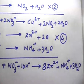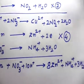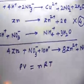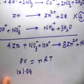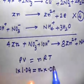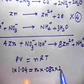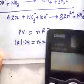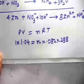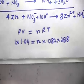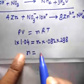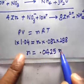Now let's find the moles of NO2 using PV = nRT. P = 1 atm, V = 1.04 L, R = 0.082, T = 290 K. Solving: n = PV/RT = 1.04 / (0.082 × 290), which gives n = 0.0425 moles of NO2.